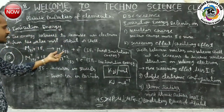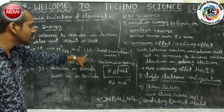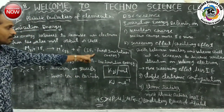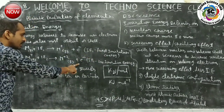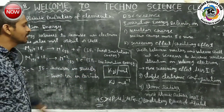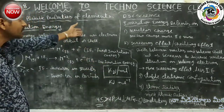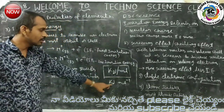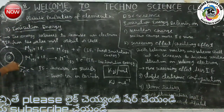When one electron is removed from an atom, that ionization energy is called first ionization energy. When a second electron is also removed from the gaseous atom, that ionization energy is called second ionization energy. This ionization energy is measured in kilojoules per mole, or kJ mol⁻¹.